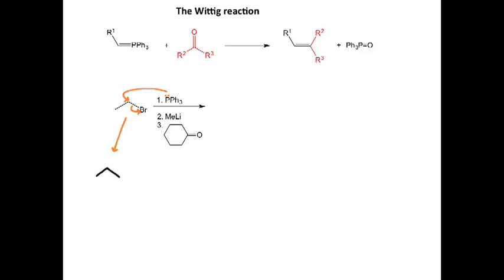We now have a new bond from carbon to phosphorus. That phosphorus is connected to three phenyl groups — PHe stands for phenyl, so there are three benzene rings attached to this phosphorus. The consequence of this is that phosphorus now has four bonds; therefore, our phosphorus has a positive charge.